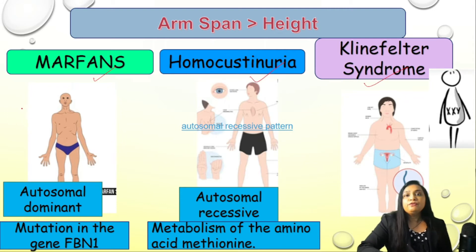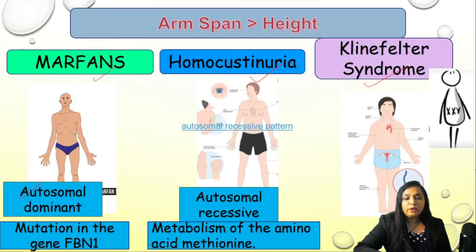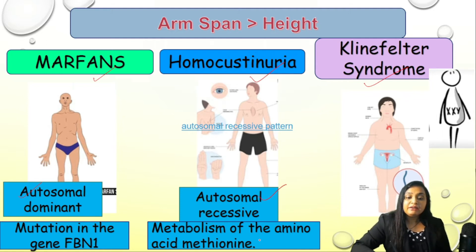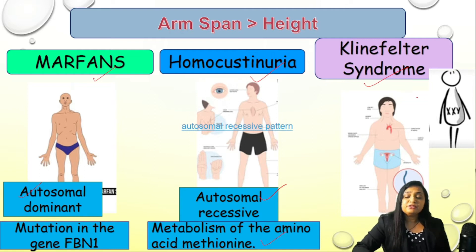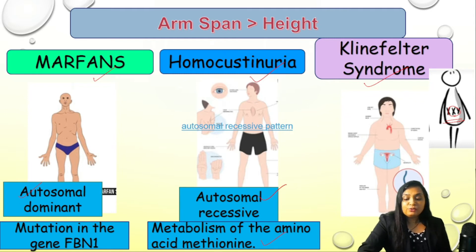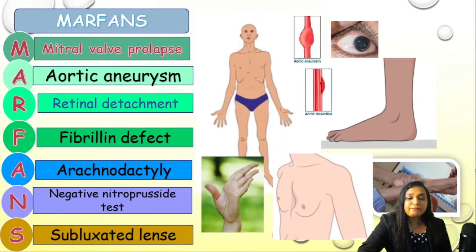Whenever we have such an abnormal finding, three important conditions come to mind. First is Marfan syndrome — an autosomal dominant condition with a mutation in gene FBN1. Second is homocystinuria — an autosomal recessive condition involving a defect in the metabolism of the amino acid methionine. Third is Klinefelter syndrome — a chromosomal issue where there is one extra X chromosome.